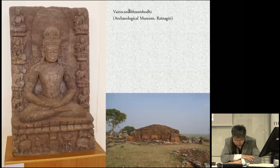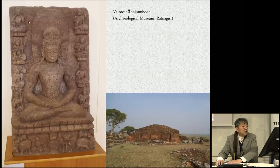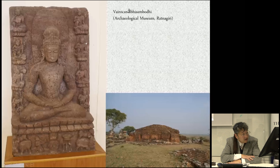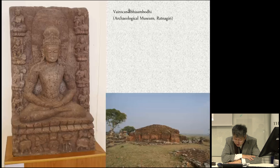A Vairocana Abhisambodhi image excavated from Chapel 5 at Ratnagiri, now kept in the Archaeological Museum at Ratnagiri, is notable for the fact that he is accompanied by eight great bodhisattvas in his halo — four on the right and four on the left. This is currently the only Indian example of Vairocana Abhisambodhi accompanied by the Eight Great Bodhisattvas.